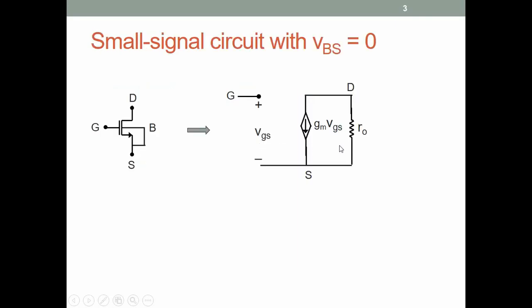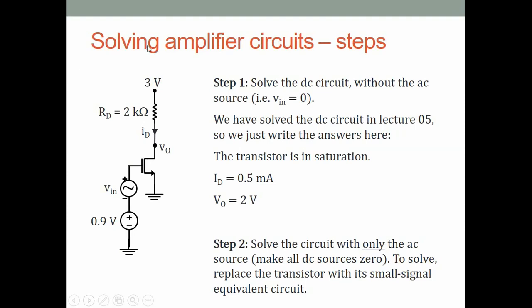This is the small signal circuit derived last time, now with R_D = 2 kilo ohms. The steps for solving circuits with an AC signal are: step one, solve under DC conditions with the AC source removed; step two, remove all DC sources and keep only the AC source, replacing the transistor with its small signal equivalent; step three, use superposition to combine both solutions.